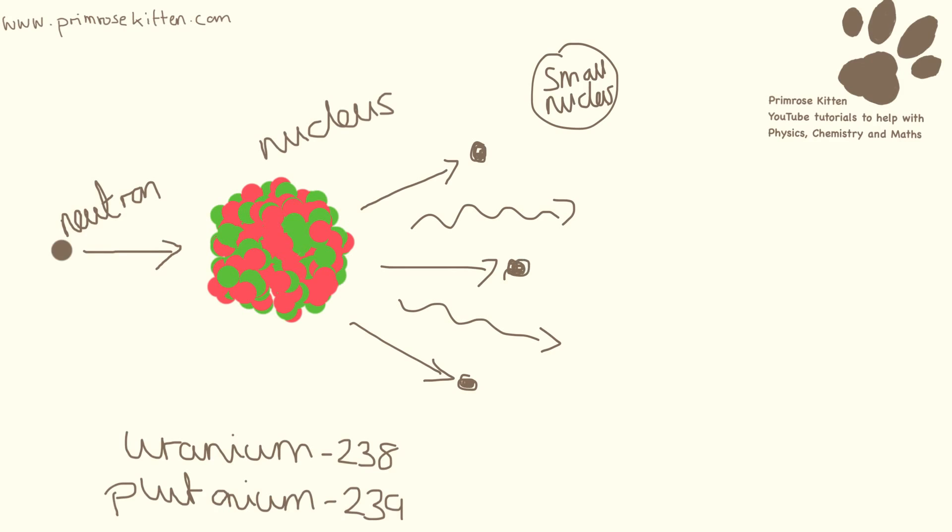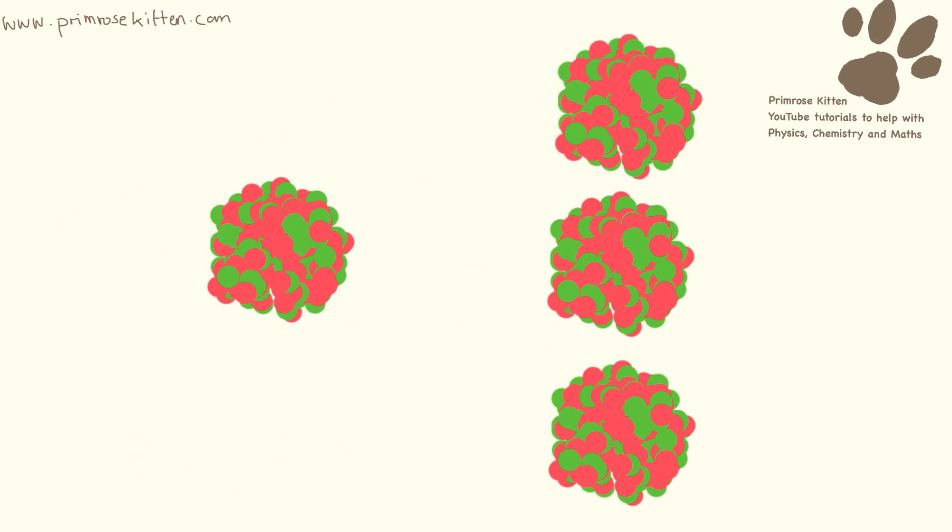Now these small neutrons that come out can then go on and hit other nuclei. And this is why nuclear fission is a chain reaction.